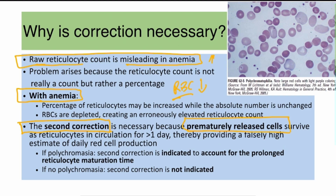During hemolysis or when the bone marrow must act rapidly, premature reticulocytes or even their precursors can enter circulation and survive for more than one day. We need to correct for this prolonged reticulocyte maturation time. To decide whether this second correction is needed, we look at the blood picture. If polychromasia is present — seen as large purple-red cells — the second correction is required.